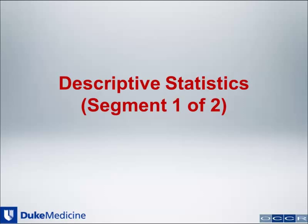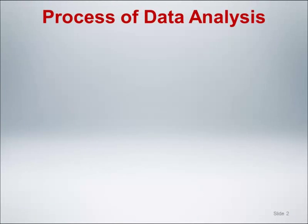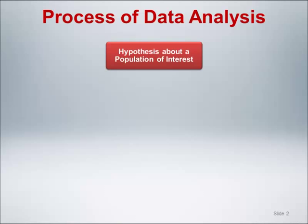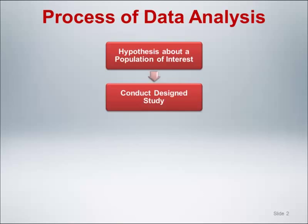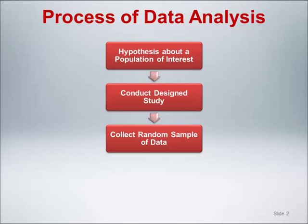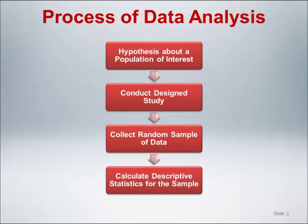We now turn our attention to a discussion of an often underappreciated topic: descriptive statistics. We will introduce common numerical and graphical descriptive statistics and discuss their use in the process of data analysis. After identifying a hypothesis in a population of interest and conducting a design study using a random sample of data from that population, we are ready to do some statistics. Our first task should be to calculate numerical and graphical descriptive statistics for the sample. The goal is to use basic statistical quantities to summarize the structure in our data and provide a description of the sample we have collected.